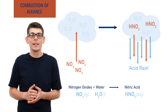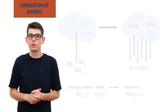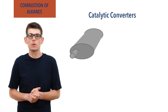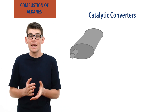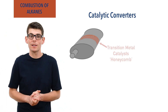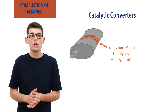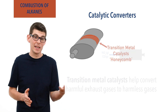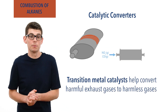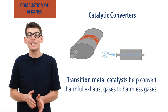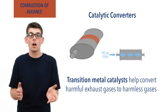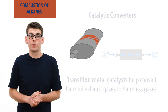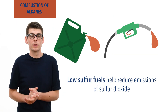Acid rain is a big problem, and to try and minimize the emission of such pollutant gases, catalytic converters are bolted onto most internal combustion engines. Inside, solid transition metal catalysts are arranged in a honeycomb-like pattern to increase their surface area, and they cause the harmful exhaust gases — including carbon monoxide and unburnt fuels — to be converted into less harmful exhaust gases such as carbon dioxide and nitrogen. The use of low sulfur fuels is essential to prevent the emission of sulfur dioxide.